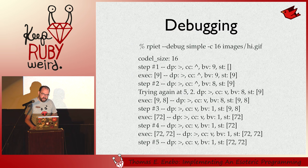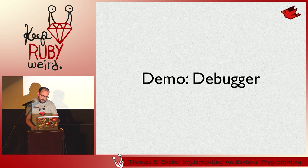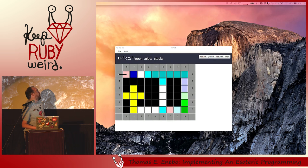It turns out all the Piet interpreters all have a very similar debugging output, and this was useful. I started to make some of the example programs run. But then I decided to take a little step further and I made a graphical debugger. So I'm going to give a little demo.